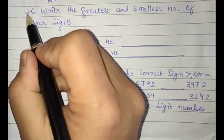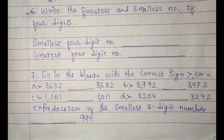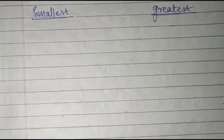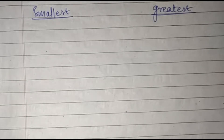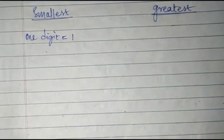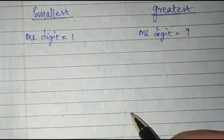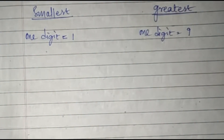Question number six: write the greatest and the smallest number of four digits. Before answering, let me explain something about greatest and smallest digit numbers. We will learn the smallest and greatest one-digit, two-digit, and three-digit numbers. The smallest one-digit number is 1 and the greatest one-digit number is 9. We do not write zero as the smallest digit number.